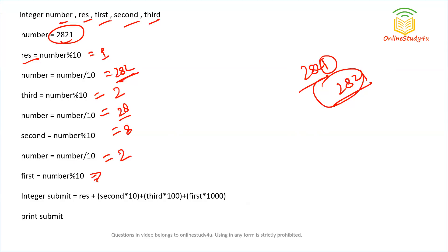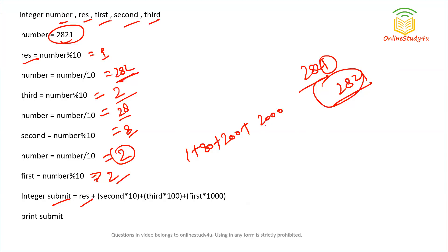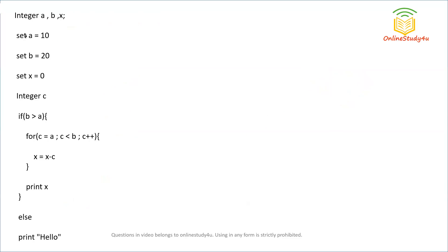We reduce number further to 2, and first equals 2 mod 10 which is 2. Now we compute: sum equals res plus second times 10 plus third times 100 plus first times 1000. That is: 1 plus 8 times 10 plus 2 times 100 plus 2 times 1000, which equals 1 plus 80 plus 200 plus 2000 equals 2281. So 2281 is the correct output for this question.